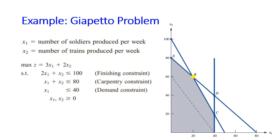We'll use the example of the Giapetto problem that we've seen in the linear programming topic. This problem has only two decision variables: x1 is the number of soldiers produced per week and x2 is the number of trains that Giapetto produces per week. It has three constraints regarding finishing hours, carpentry hours, and the demand of the soldiers. Because we only have two variables, we may graphically plot the feasible region, and the optimal solution for this problem is at point B.